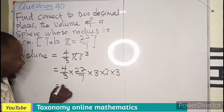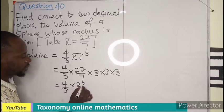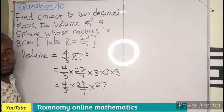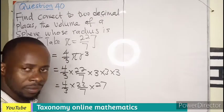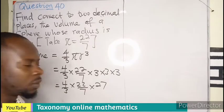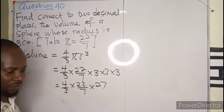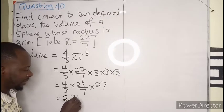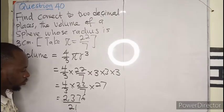In this case, I will be having 4 over 3 times 22 over 7 times 27. So I need to multiply all these together. When you multiply 4 by 22 by 27, you will be having 2,376. Then 3 times 7 is also 21.